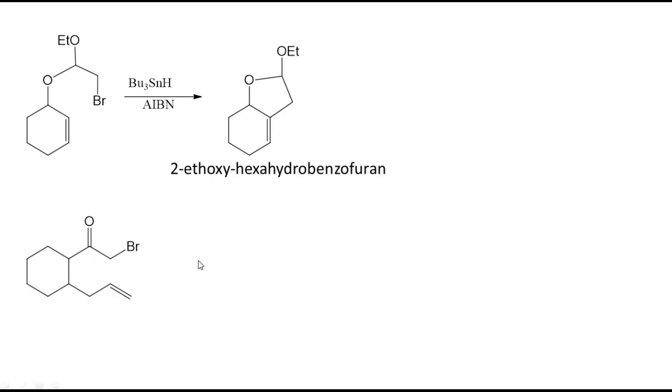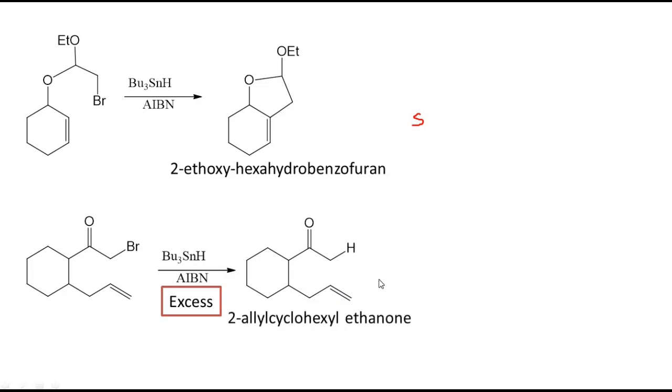Let us take another reactant. This cyclization ring formation. That is Bu3SnH AIBN in excess. So, in excess what happens? This bromine will be replaced by hydrogen. No ring formation is occurring. Remember, remember if there is a steric hindrance, there is a steric hindrance and tributyltin hydride is excess, no ring formation occurs. These two points you have to remember. So, hence the product is like this: 2-allyl, cyclohexyl, ethanone. No ring formation occurs.